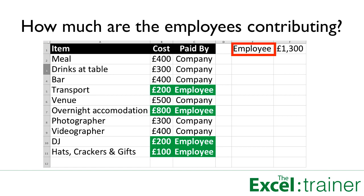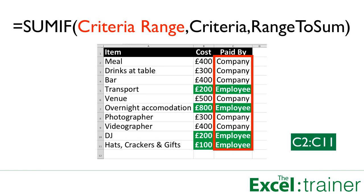The SUMIF function requires three arguments. The first argument is the criteria range, and this is the range that is being evaluated against the criteria. In this spreadsheet we need to find the word 'employee' in the range C2 to C11.